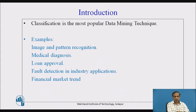In medical diagnosis, the image of a particular organ might be taken and diagnosis is done based upon whether that organ is defective or not. For loan approval, classification takes the requirement from a particular user and finds out whether the loan can be approved or cannot be approved, thus dividing it into two classes. We could also have a third pending class associated here.